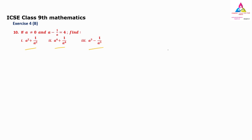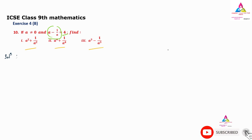These are the three things they have told you to find, and all three are different types. The given condition is a minus 1 by a equals 4, and using this we have to prove each one. Let us learn one by one. So for the solution, the first thing we write down is the given: a minus 1 by a equals 4.